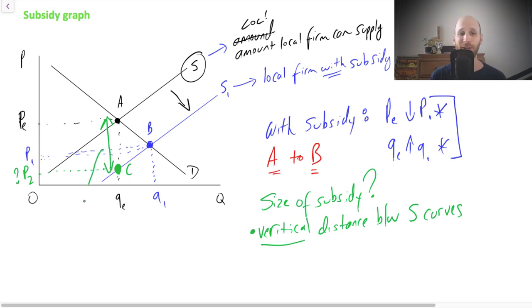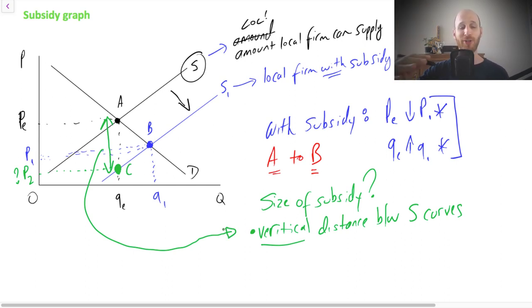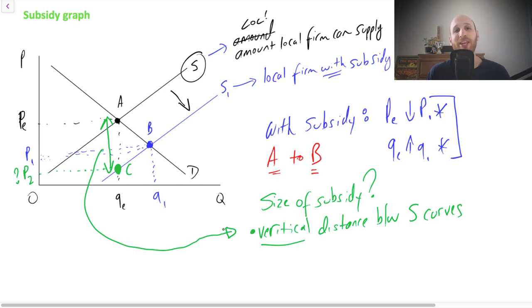To work out the size of the subsidy, I need to identify point C — whatever level that is — and the size of the subsidy is the vertical distance between the curves. I pick a point on the curves, go vertical, and work out the difference between the prices. You'll be given a series of prices if asked to calculate it. Note: the distance is vertical, not horizontal.